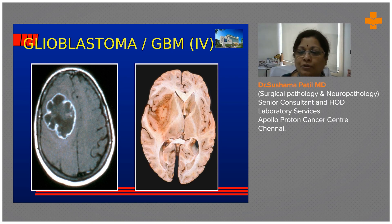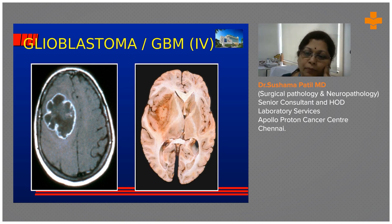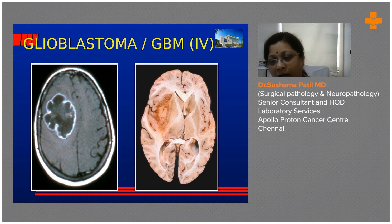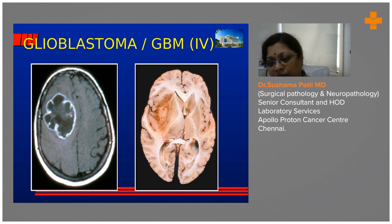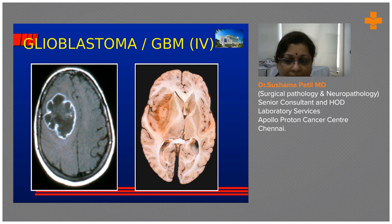The tumor is right in the insular cortex and you can see it pushing the brain to the other side. Anteriorly, the large thick white band dividing the two hemispheres is the corpus callosum. Posteriorly, below the occipital horn of the lateral ventricle, the white structure in the center is also corpus callosum.